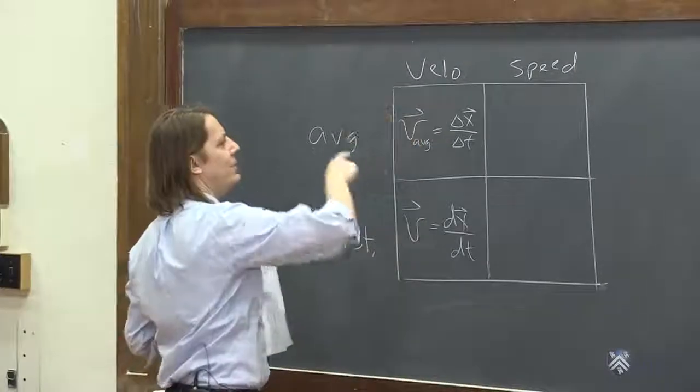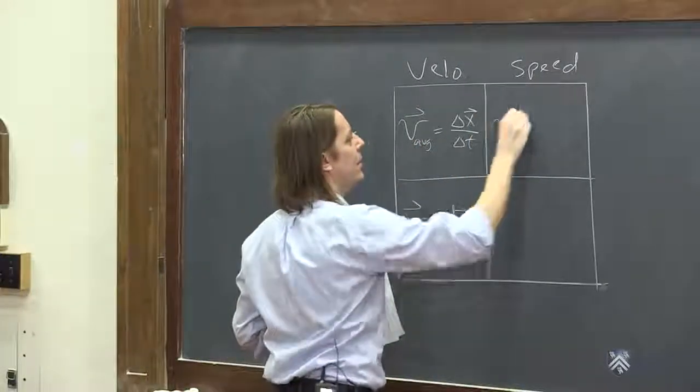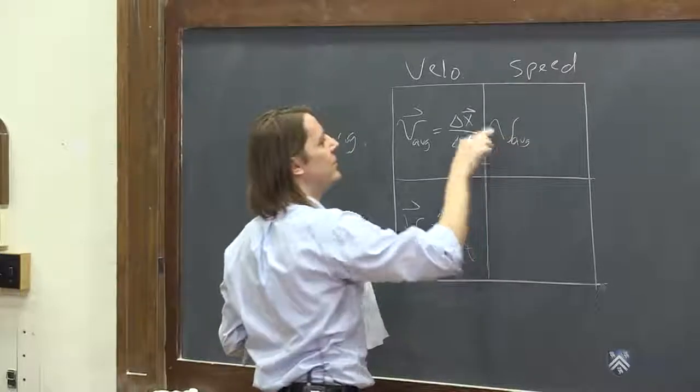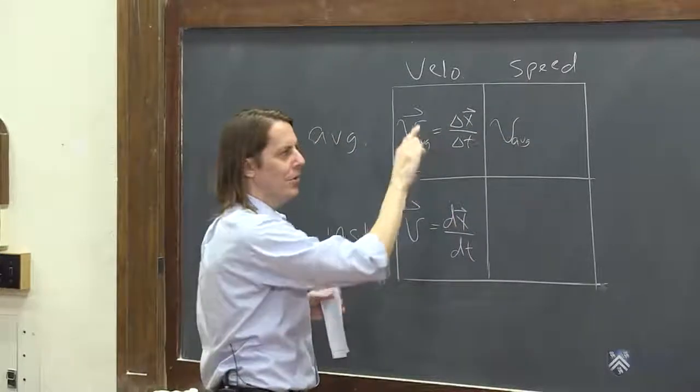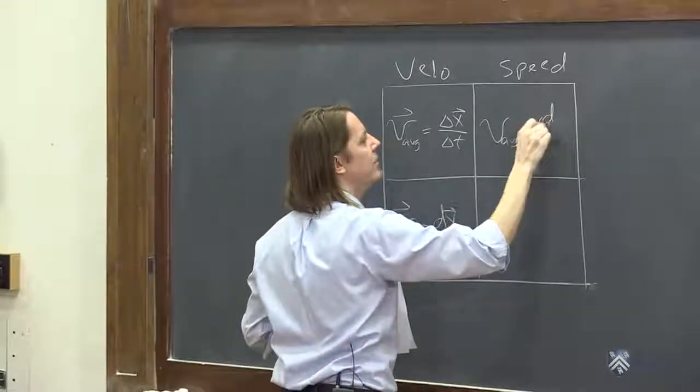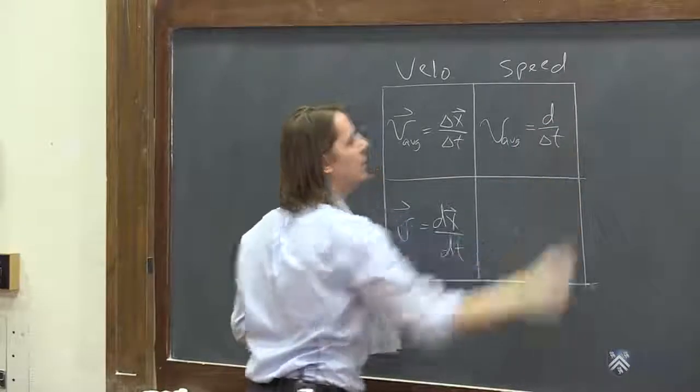And then we said there's this thing, the average speed. And we put the a, v, g because it's average, but no vector symbol because it's not a vector. It's just the distance traveled over delta t.